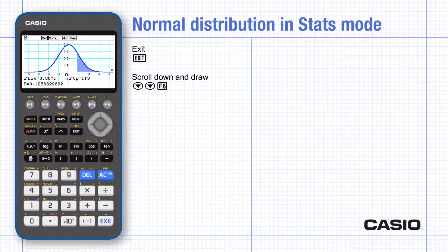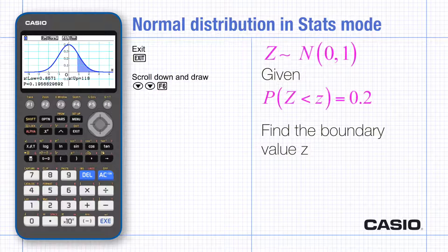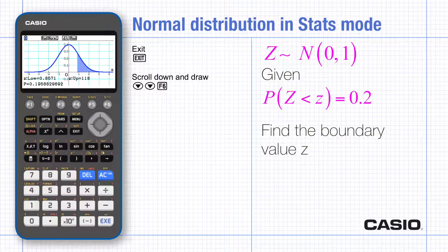Sometimes we know the distribution and the probability that the random variable falls in a given interval and the question then asks us to find the boundary value for this interval.